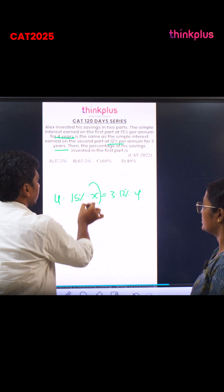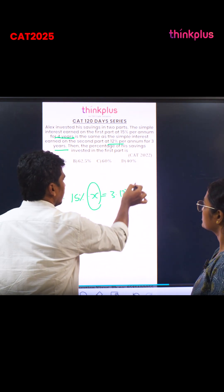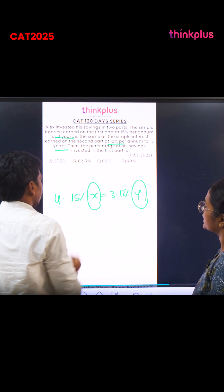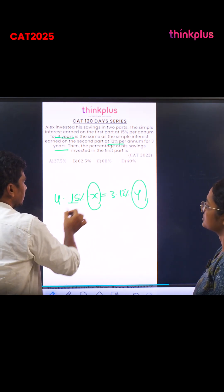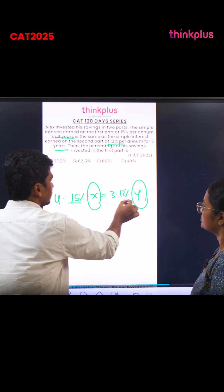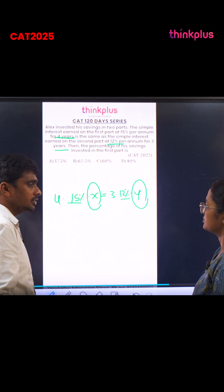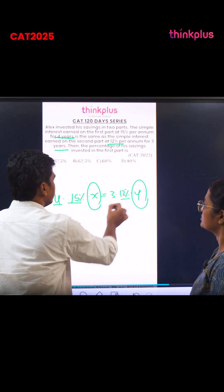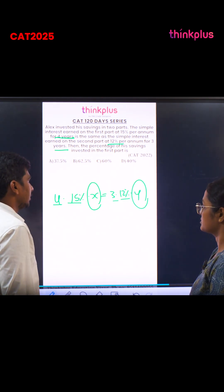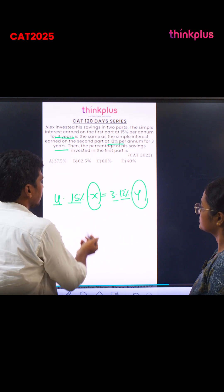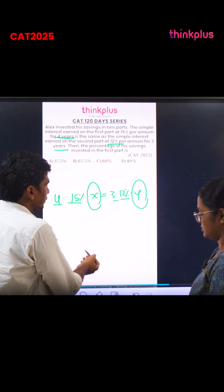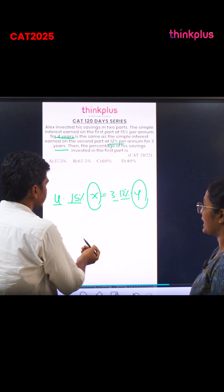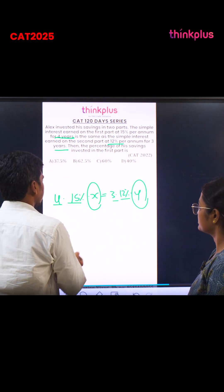So the first amount is X and the second amount is Y. The one-year interest rate here is 15% for four years, and the one-year interest rate is 12% for three years. Based on this, we can get the value ratio of X and Y.